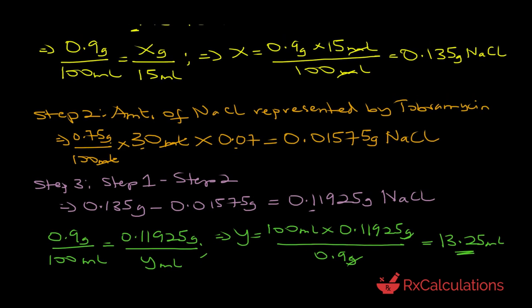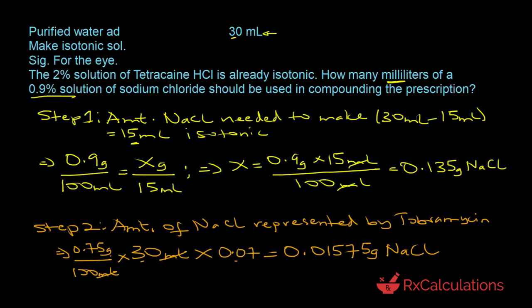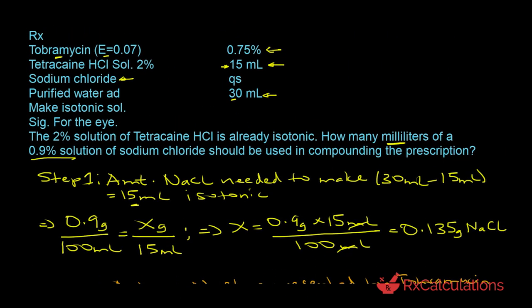The potentially tricky part is understanding that because the tetracaine hydrochloride is isotonic, the volume you actually need to adjust is the difference between the total quantity and the volume already isotonic. If you get step 1 wrong, everything will be wrong subsequently. Let's reinforce this concept by looking at another question.